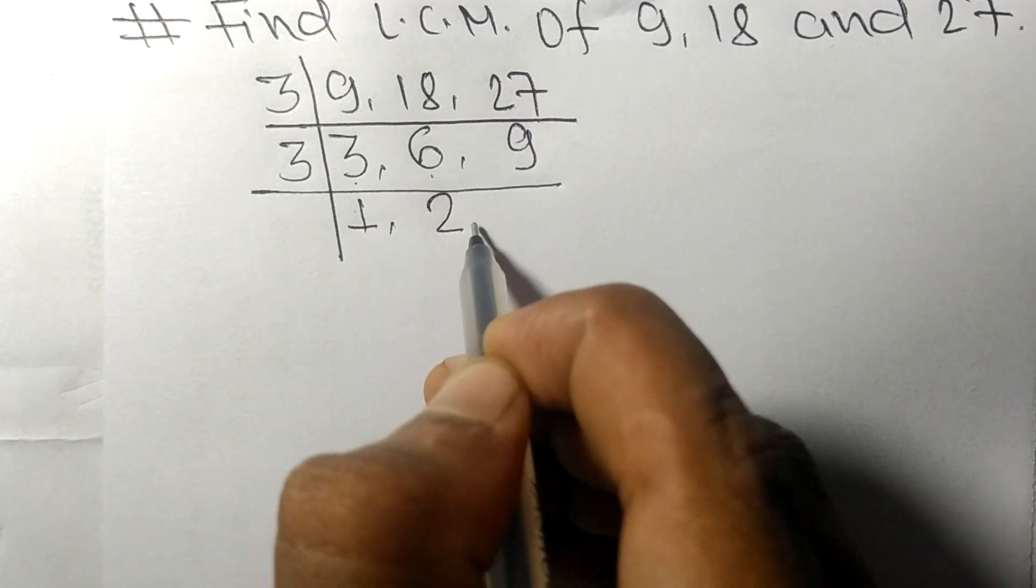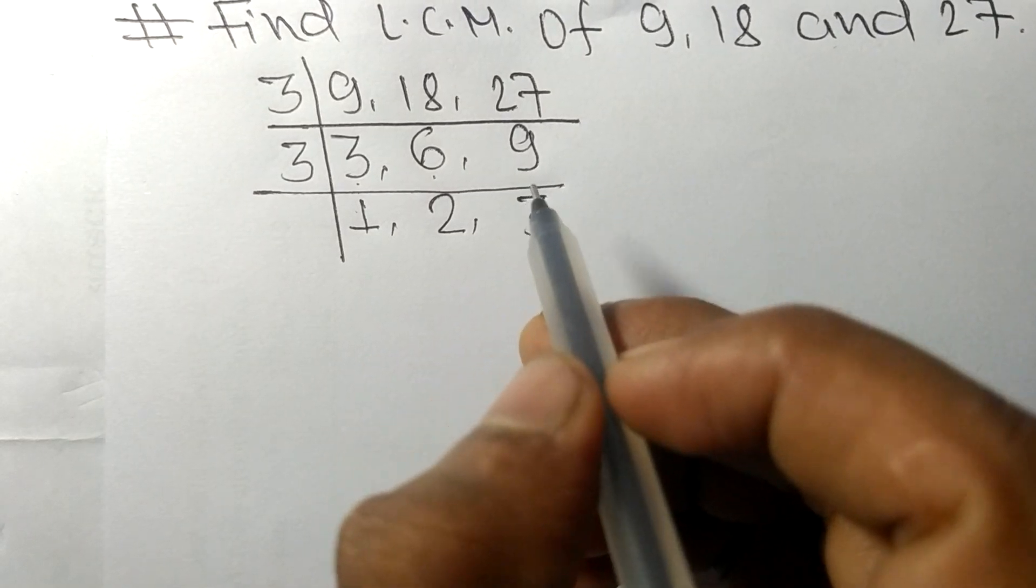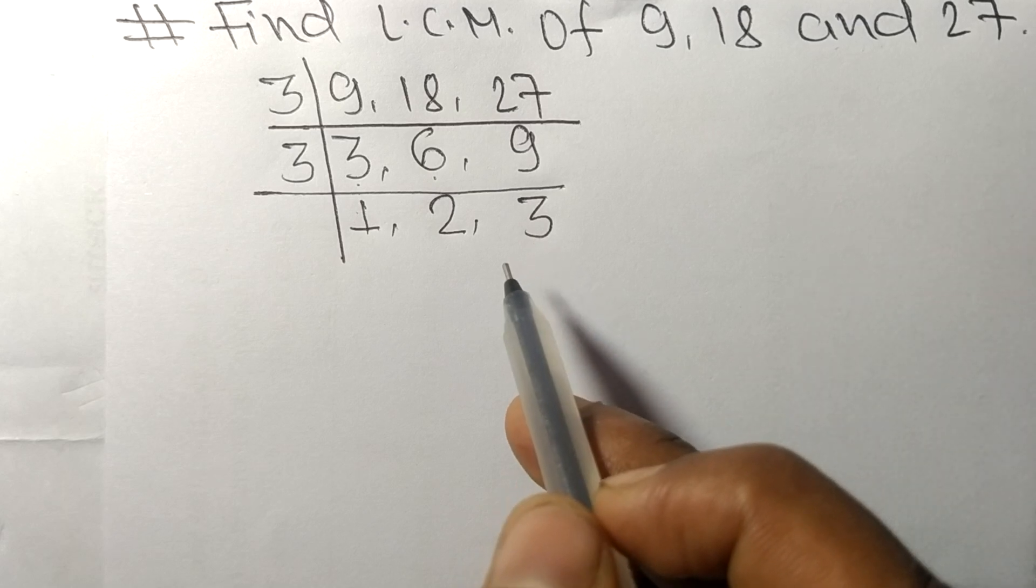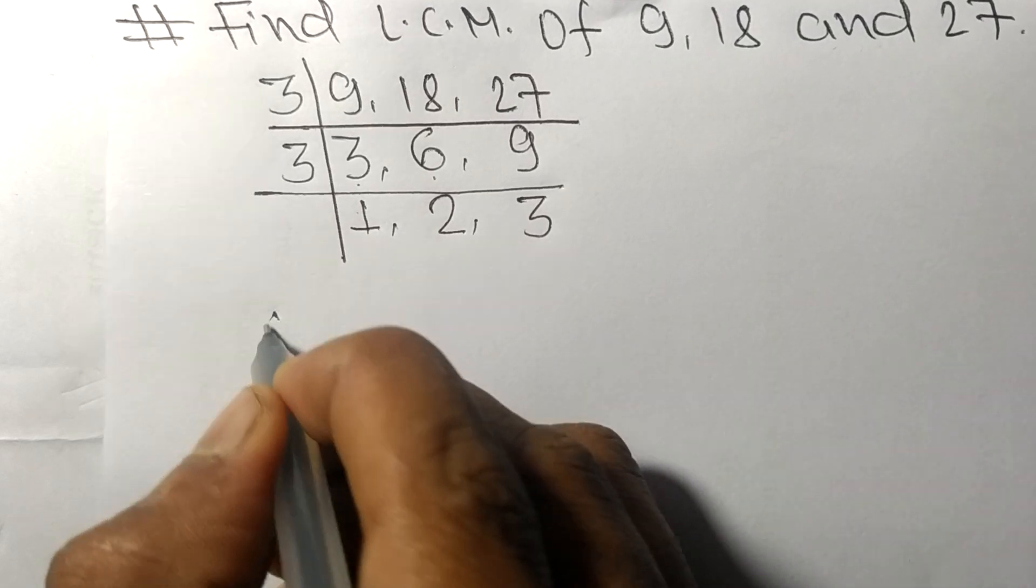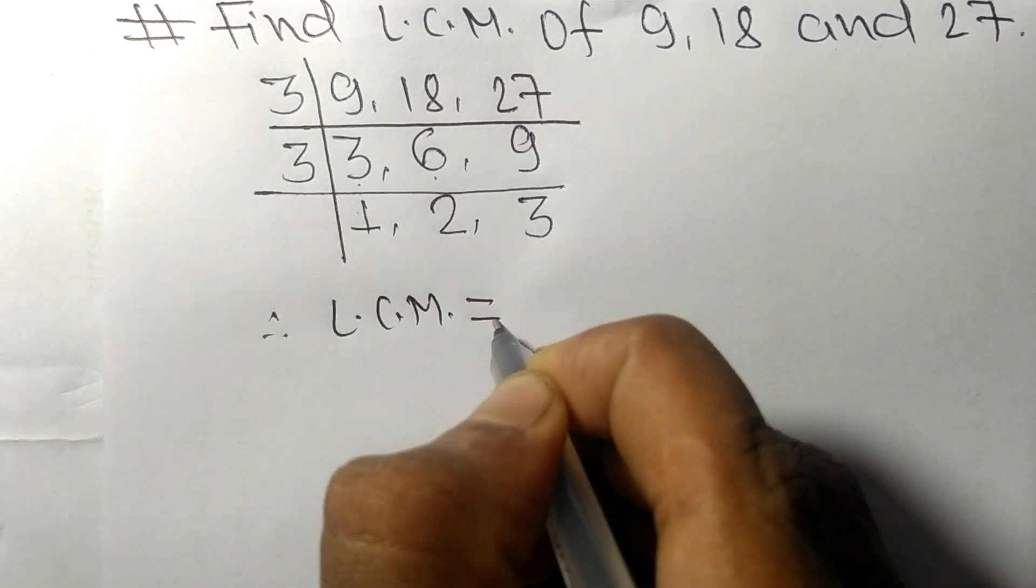3 times 2 means 6, 3 times 3 means 9. So now we got 1, 2, and 3 which are not exactly divisible by the same number. Therefore, its LCM is equal to